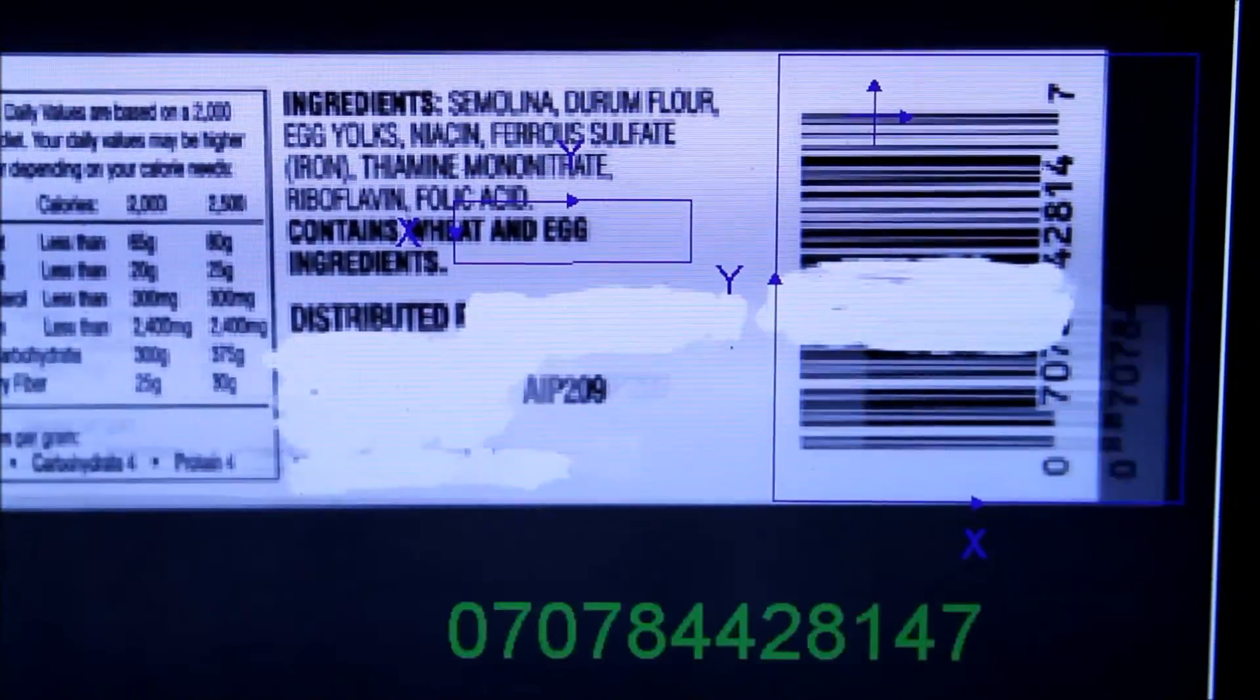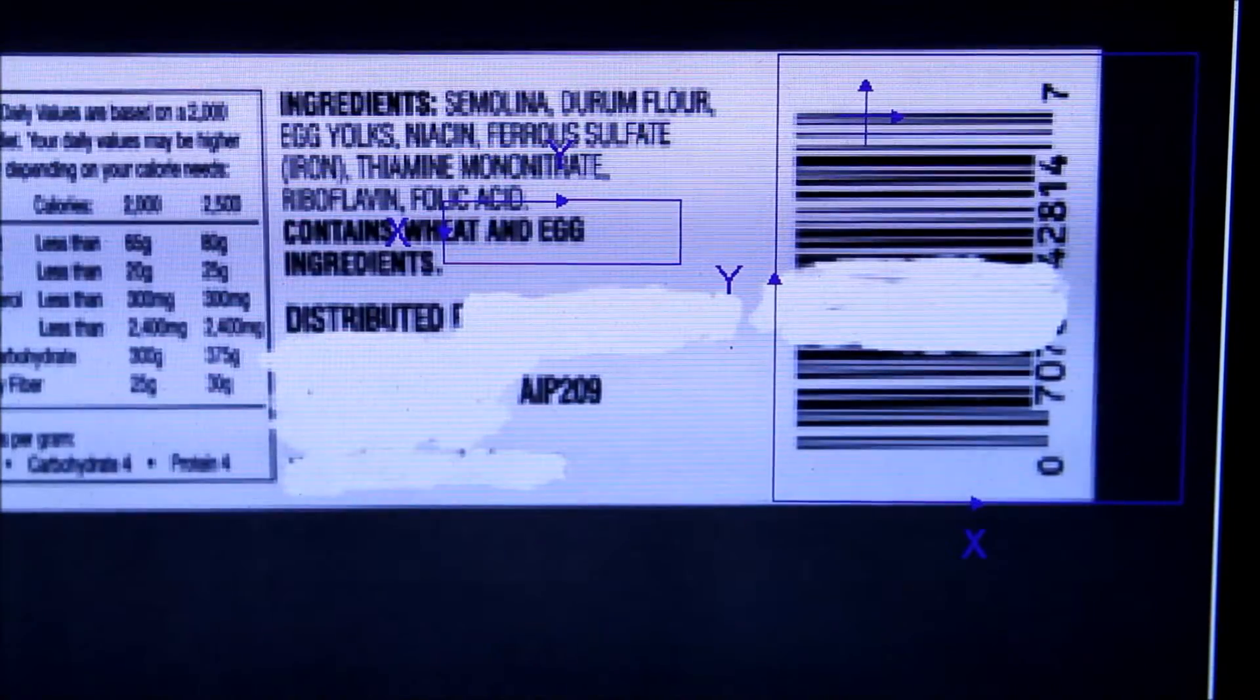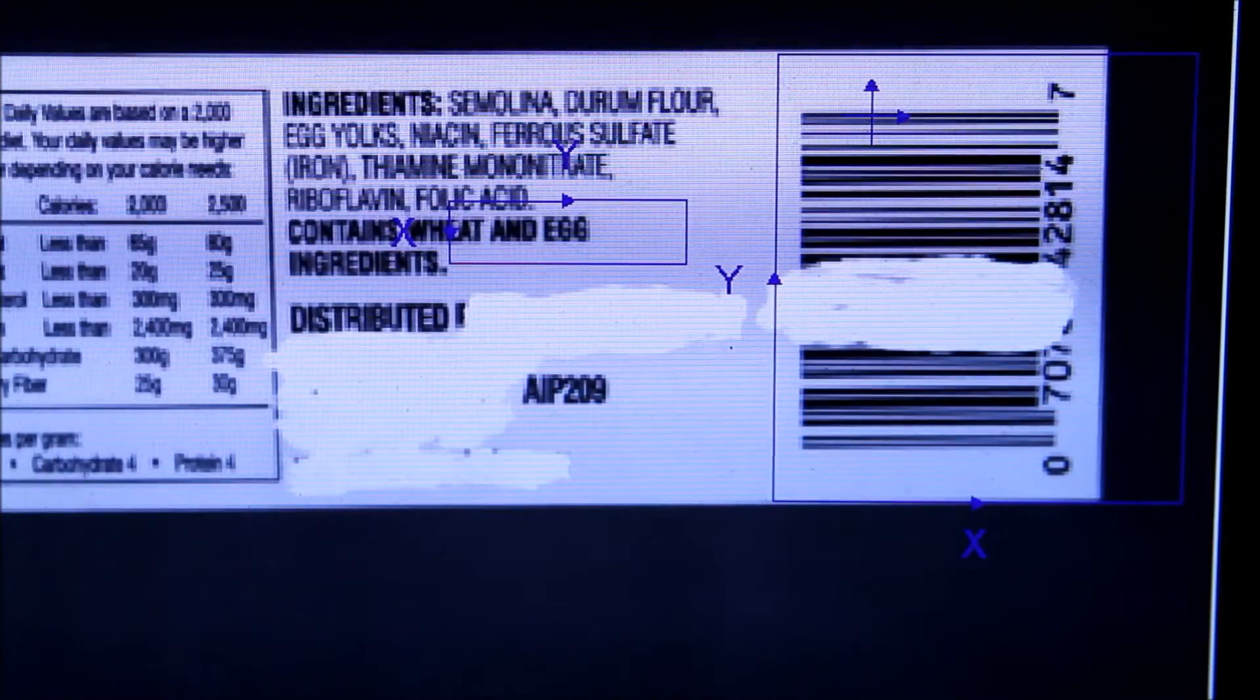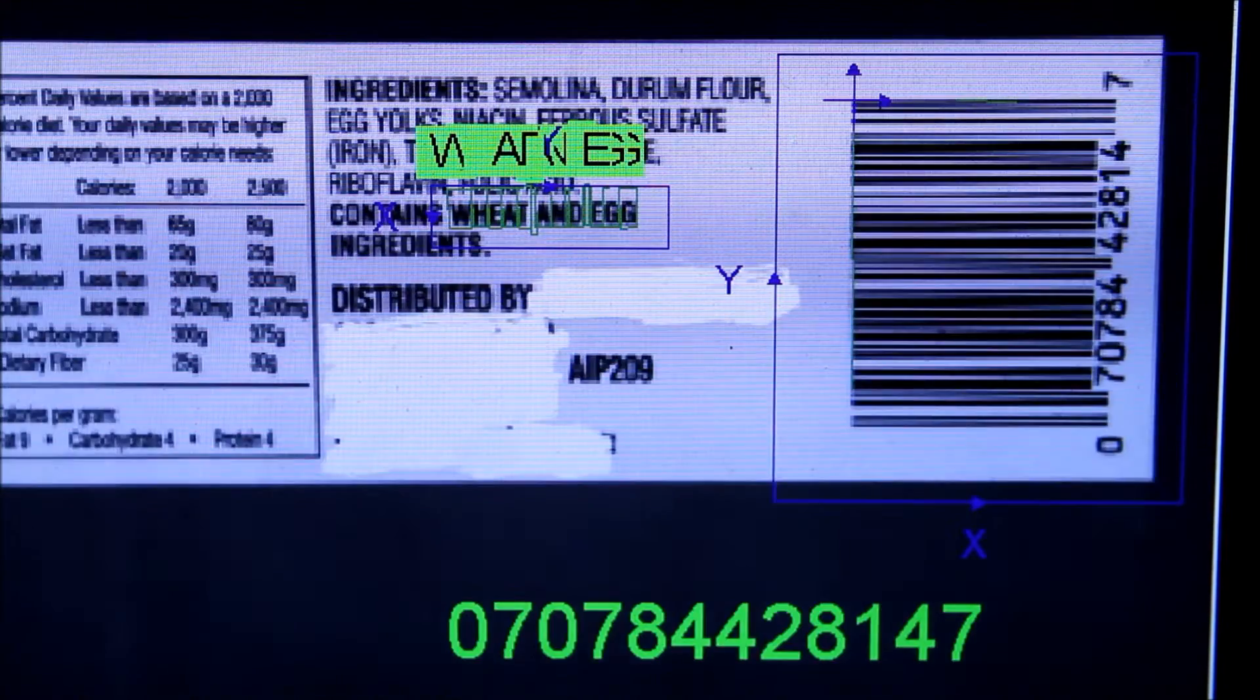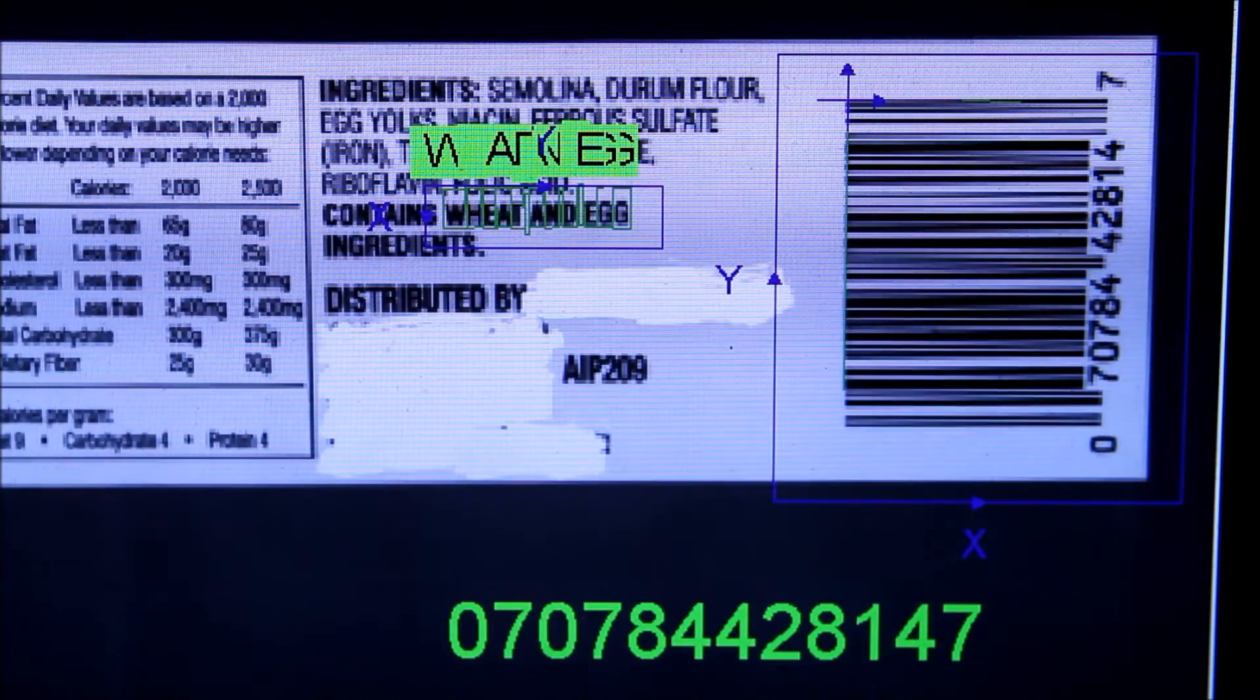The line scan camera is able to handle a larger field of view with higher resolution with a much smaller mechanical profile and is frequently used in web inspection applications for these reasons.